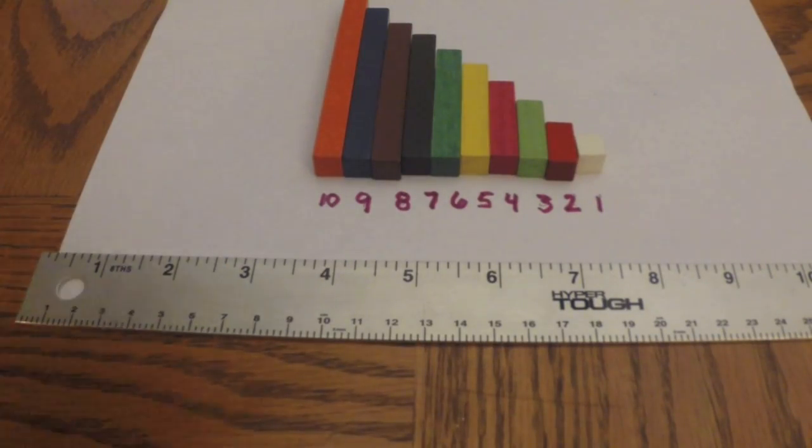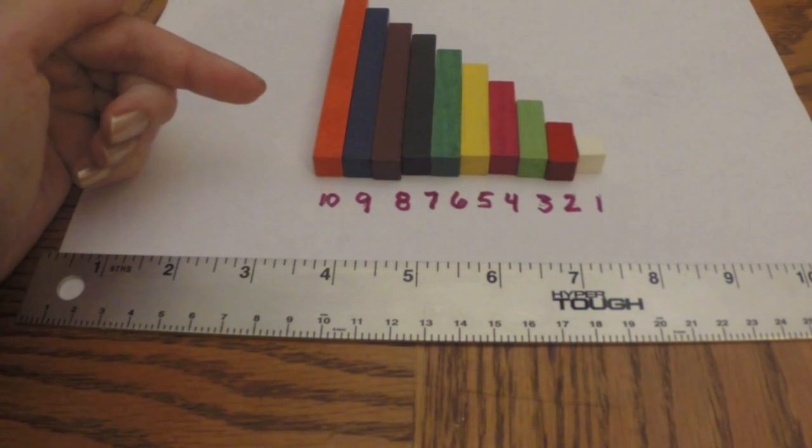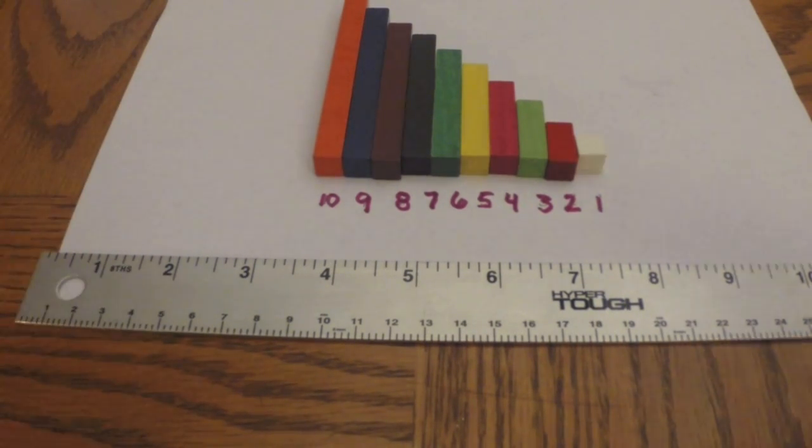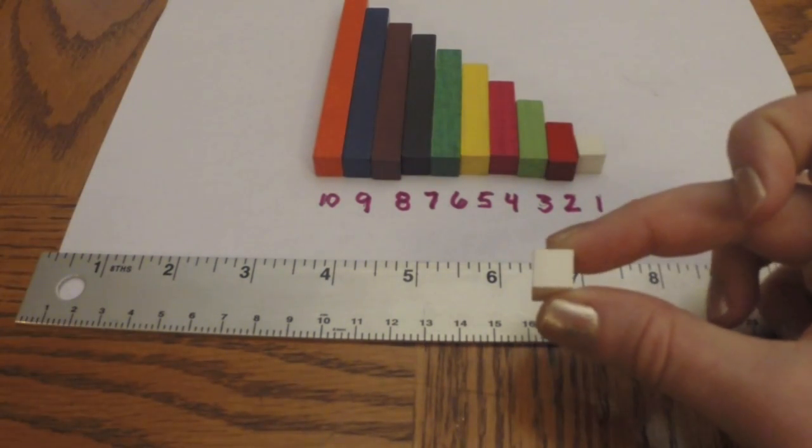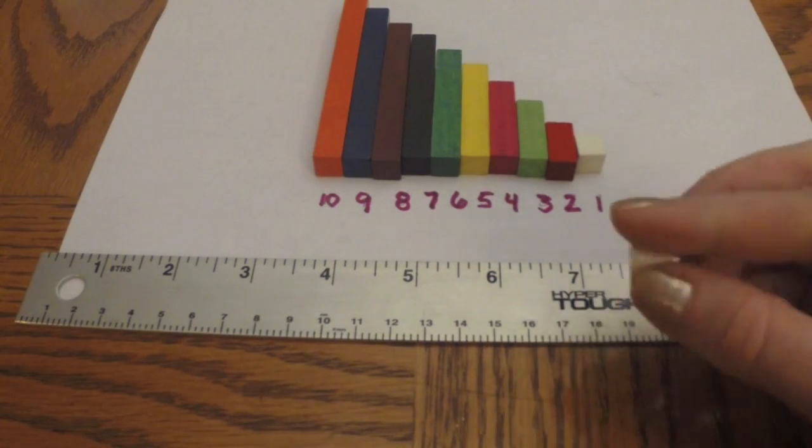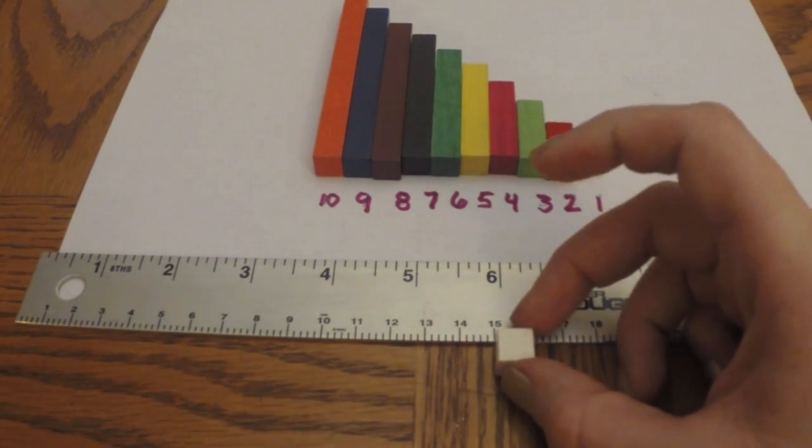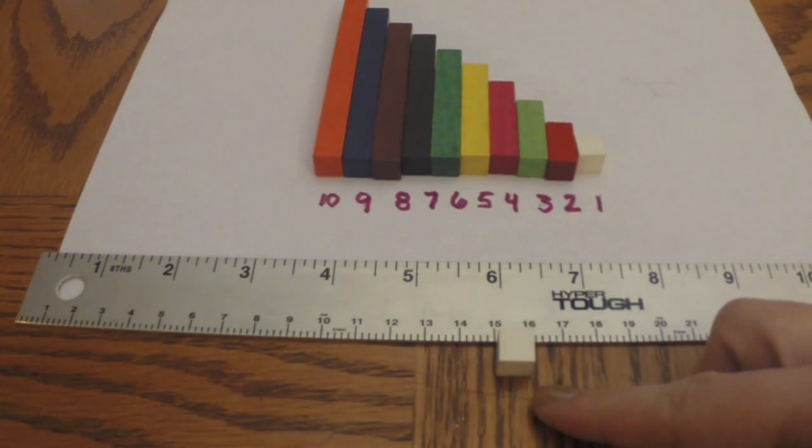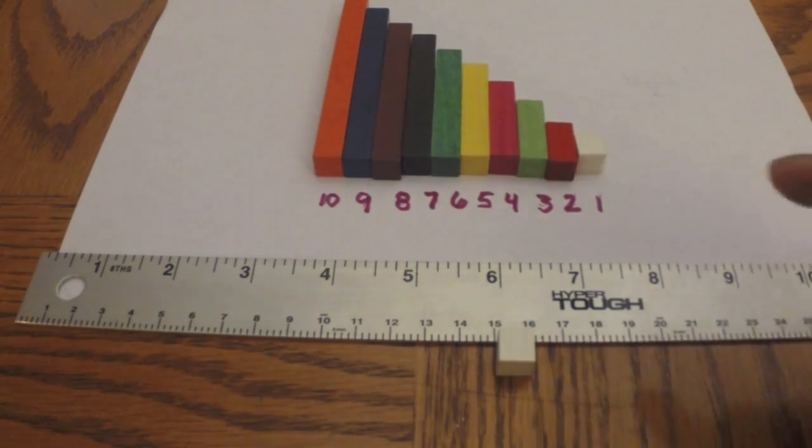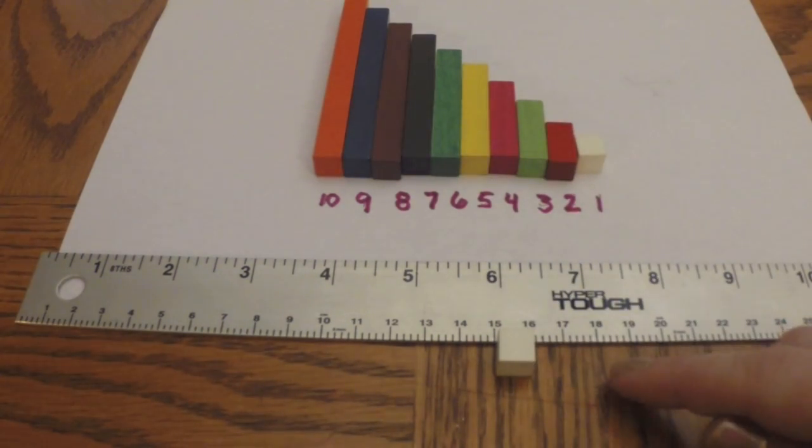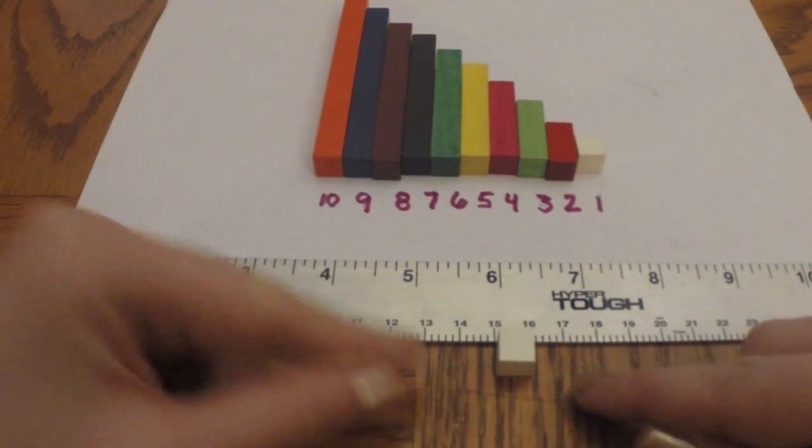So for this first one, I'm keeping the Cuisenaire rods up here so you can refer to them and see which colors I'm using. And I just wanted to show you that the white one is actually one centimeter by one centimeter in length. If you look right now it's between the fifteen and sixteen, but it perfectly matches up to be one centimeter.